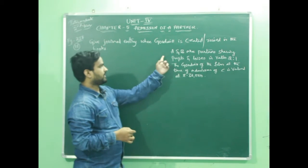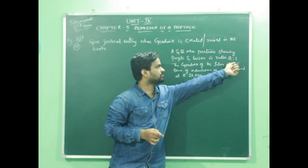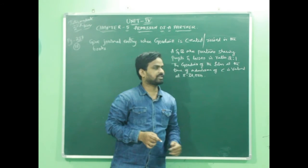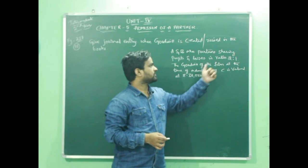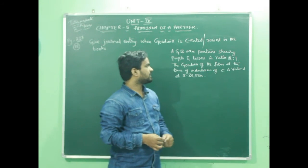Here is an example. A and B are partners sharing profit and losses in ratio 2 is to 1. So 2 plus 1, it becomes 3. The amount of goodwill to be distributed among A and B will be 30,000 into 2 by 3, 30,000 into 1 by 3.